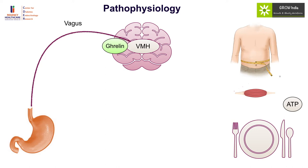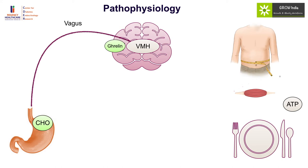Importantly, it is ghrelin which also stimulates growth hormone secretion, and therefore in a hunger state, growth hormone is secreted more — but this growth hormone is not going to make the individual grow. It is actually there to ensure more lipolysis so that there is a greater source of energy available. Following nutrient intake, direct distension of the abdomen causes decreased vagus stimulation as well as decreased ghrelin stimulation, which switches off the hunger signal.